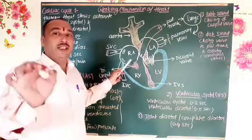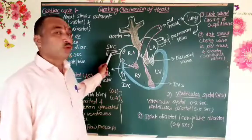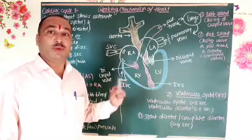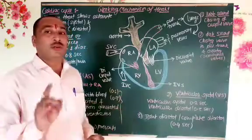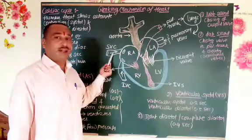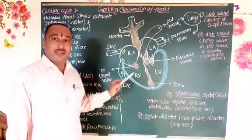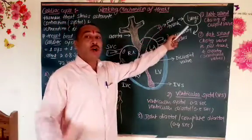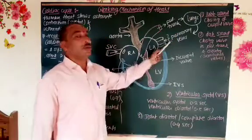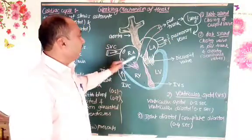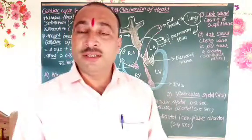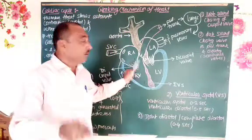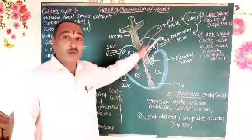The right atrium receives deoxygenated blood from the body through the superior vena cava, inferior vena cava, and coronary sinus. At the same time, the left atrium receives oxygenated blood from the lungs through the pulmonary veins. So the right atrium receives deoxygenated blood and the left atrium receives oxygenated blood, because purification of blood occurs in the lungs.